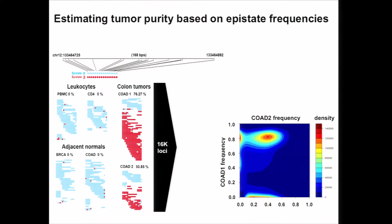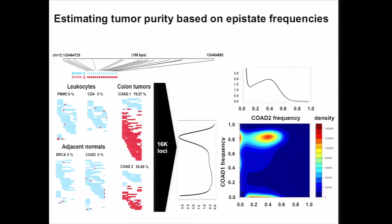If we plot the scatter plot of the epistate frequencies, we see three distinct clusters indicating whether a locus is methylated in one of the two tumors or in both tumors. Plotting the density plot allows us to compute the mode of the frequency distribution, from which we can estimate the tumor purity. For example, the first colon tumor has about 80% purity and the second has about 40% purity.